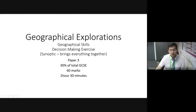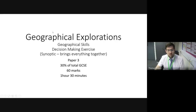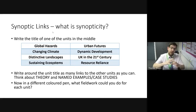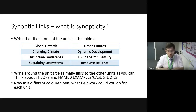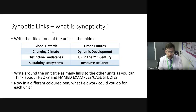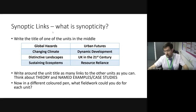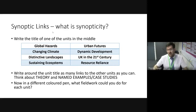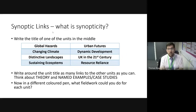Paper 3 is going to be 30% of your GCSE, 60 marks, and it's an hour and a half. It tests everything you've done in the whole course. One thing you could do as prep is take a big bit of paper, write all eight units on it — all the names of the human and the physical units — and around each one write as many links to the other units as you can. For example, Haiti earthquake hazard links to urban futures and redevelopment, dynamic development, and the UK 21st century.